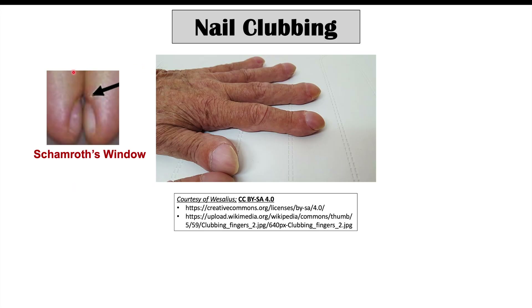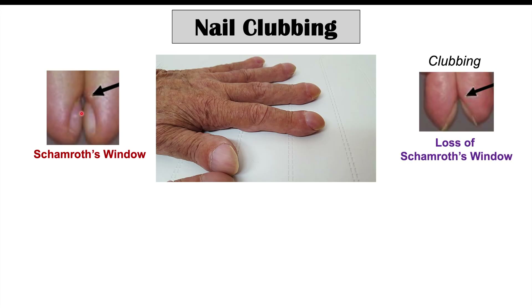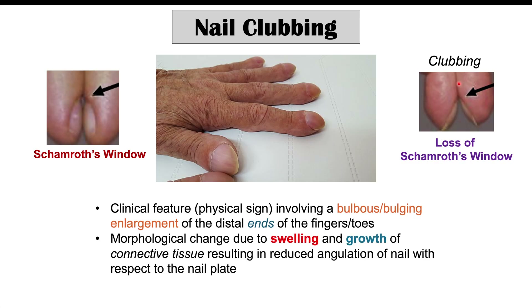We can also see nail clubbing in some patients with celiac disease. With normal nails, placing two index fingers together reveals a small space called Schamroth's window. With clubbing, there is a change in the nail and finger shape such that Schamroth's window is lost. Nail clubbing is a physical sign involving a bulbous enlargement of the distal ends of the fingers and toes, changing the angulation of the nail. It is likely due to underlying swelling and growth of connective tissue, as visible in the comparison images.